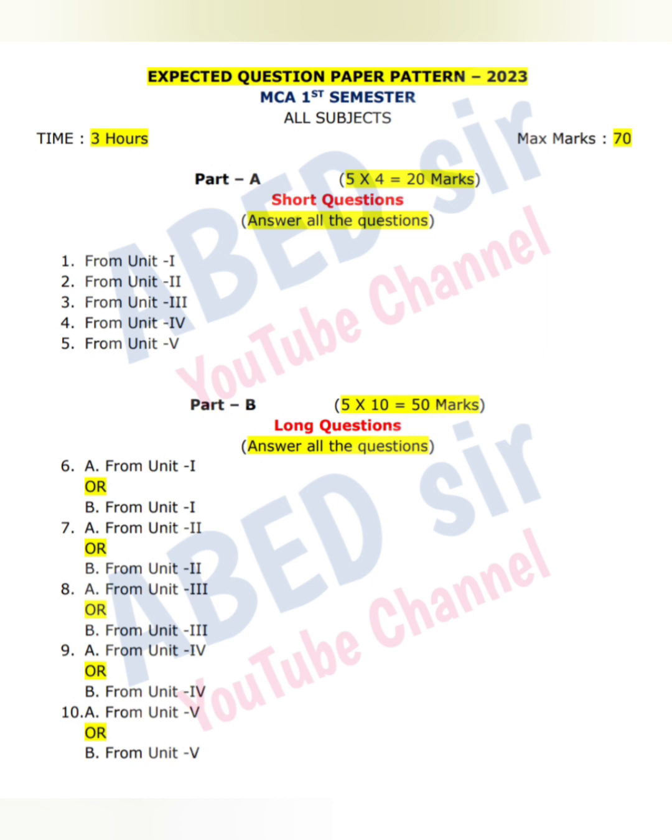In part B, long questions will be asked. You have to answer all the questions. In part B, internal choice is there. From each unit, two questions will be asked. Out of two, you have to answer any one. And each one carries 10 marks. So, 5 tens, 50 marks you will get from part B.